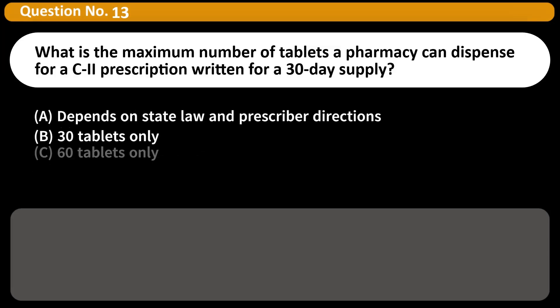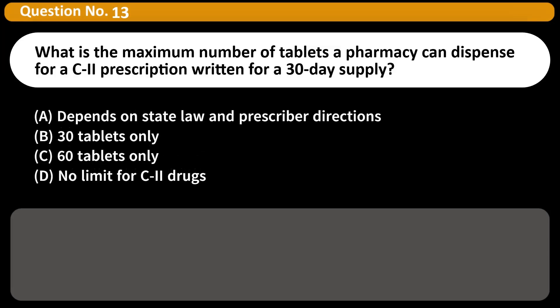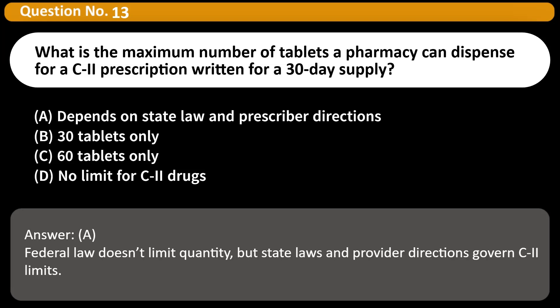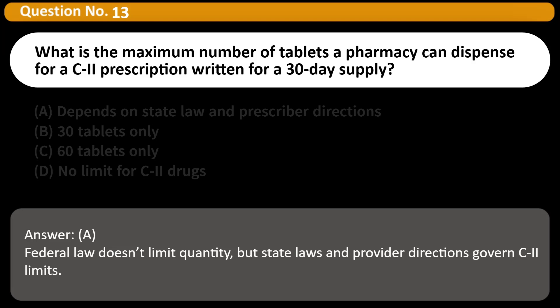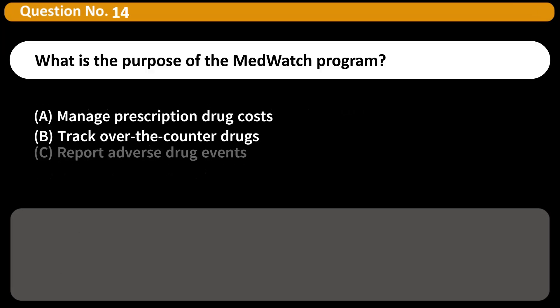What is the maximum number of tablets a pharmacy can dispense for a C2 prescription written for a 30-day supply? A. Depends on state law and prescriber directions. B. 30 tablets only. C. 60 tablets only. D. No limit for C2 drugs. Answer: A. Federal law doesn't limit quantity, but state laws and provider directions govern C2 limits.